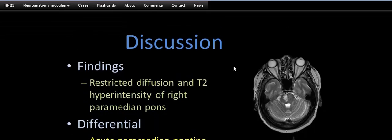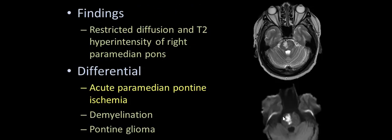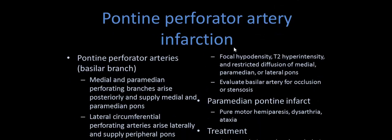The findings are: restricted diffusion in the DWI view and T2 hyperintensity of the right paramedian pons. The differential diagnoses are: first, acute paramedian pontine ischemia; second, demyelination — at that time we go for MRI spectroscopy; and it could possibly be a pontine glioma also. Our diagnosis is acute paramedian pontine ischemia — pontine perforator artery infarction.